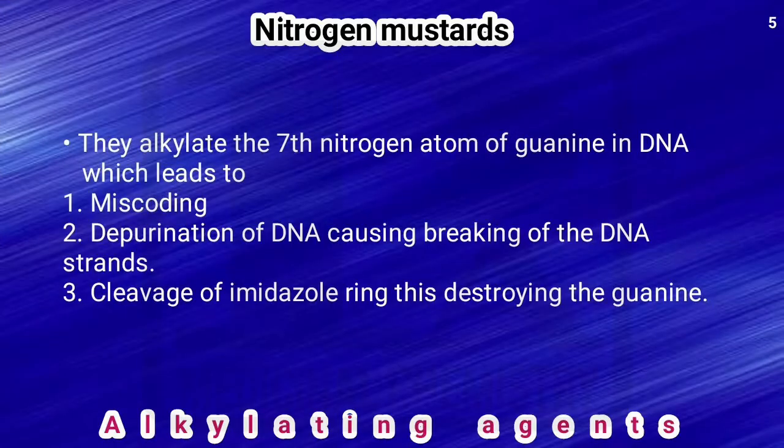Nitrogen mustards specifically alkylate the seventh nitrogen atom of guanine in DNA, leading to miscoding, depurination causing breaking of DNA strands, and cleavage of the imidazole ring, thereby destroying the guanine.